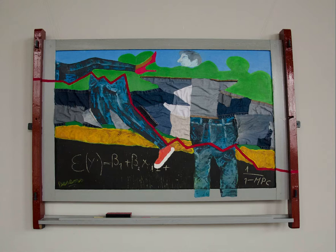You see an old wooden chalkboard, probably once used for economy lessons. The red graph shows the economic crisis as a part of a typical Dutch landscape — a river of blue jeans.